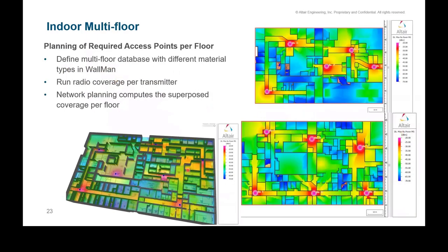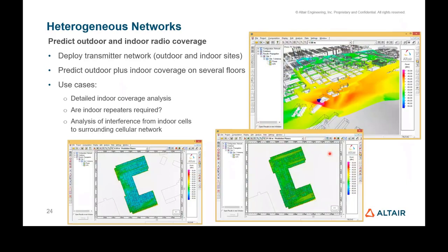An example shows various transmitters placed on different floor levels of a building, showing how access points radiate across those floors. The combined indoor-outdoor capability allows analysis of a detailed building surrounded by other city buildings, computing indoor coverage based on what comes from outside, determining if repeaters are needed, and assessing interference from heterogeneous networks — for example, Wi-Fi alongside cellular signals.